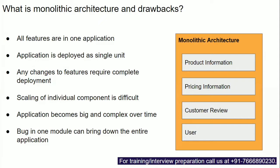Our first question is: what is monolithic architecture and what are its drawbacks? In monolithic architecture, all features are built in one big application. For example, an e-commerce application has product information, pricing feature, and customer review feature — all in one big application. It is deployed as a single unit.